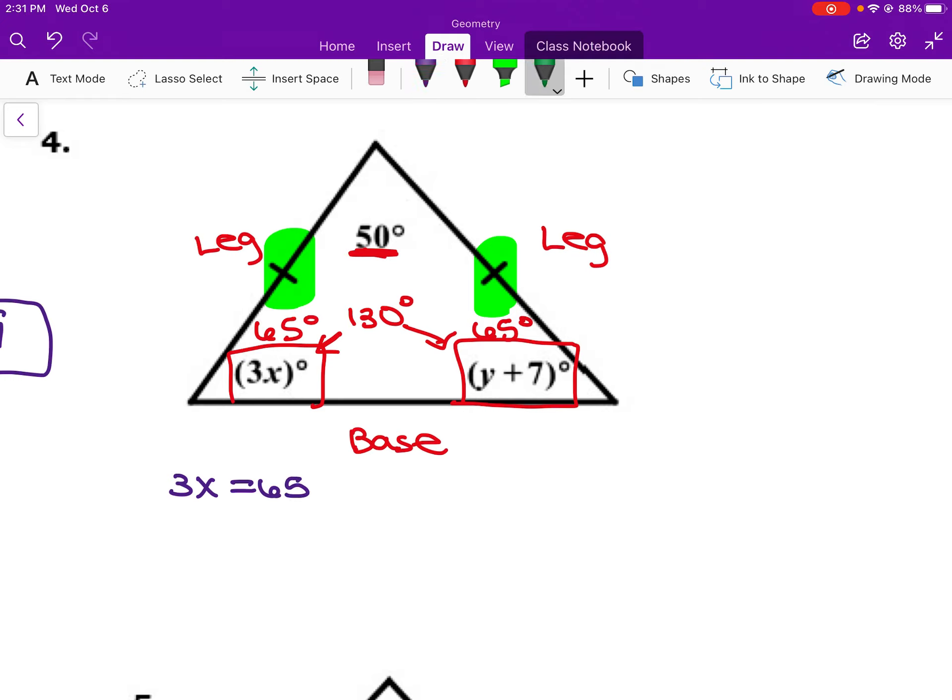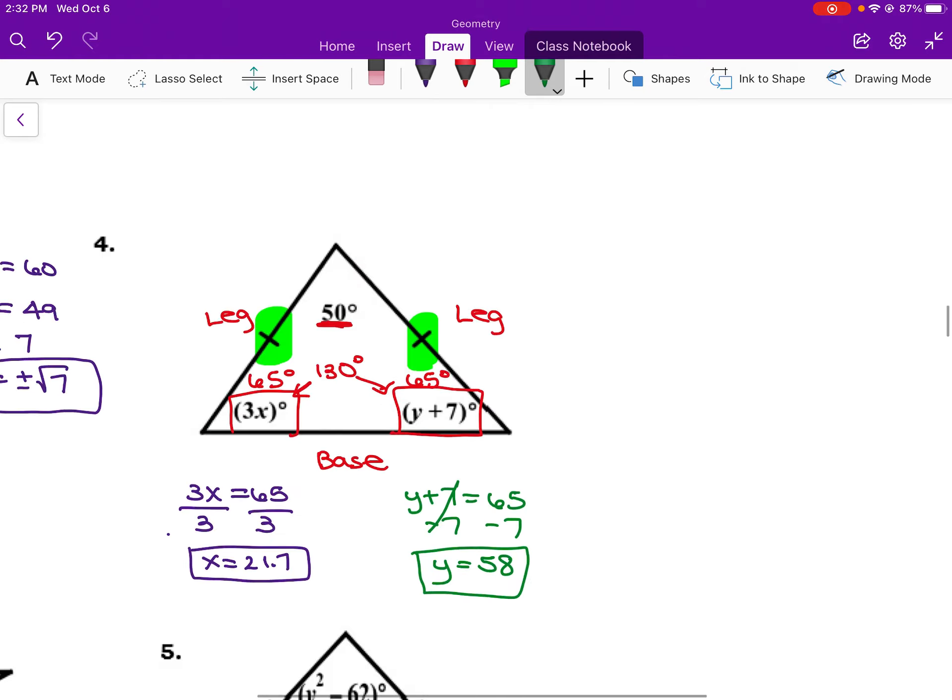So I could just write two equations and say, well, 3x equals 65. Also, y plus 7 equals 65. Over here, if I divide both sides by 3, then I would get x equals about 21.7. And then over here, if I subtract 7 from both sides, we get y equals 58. And there we have it.